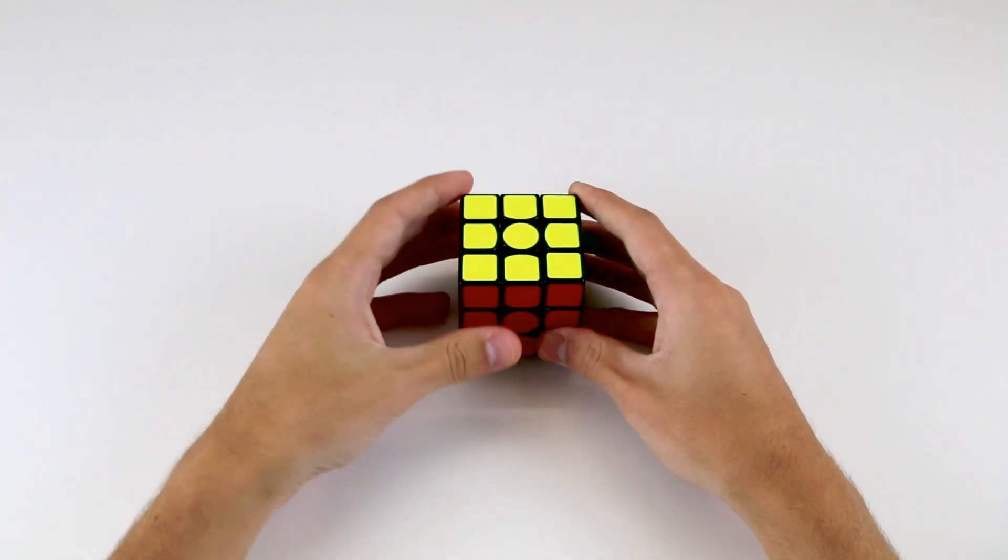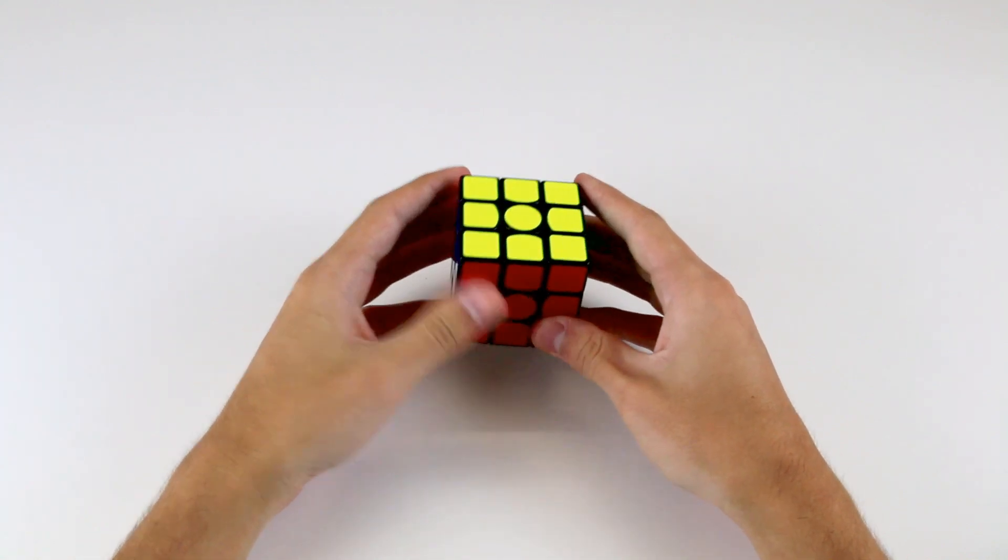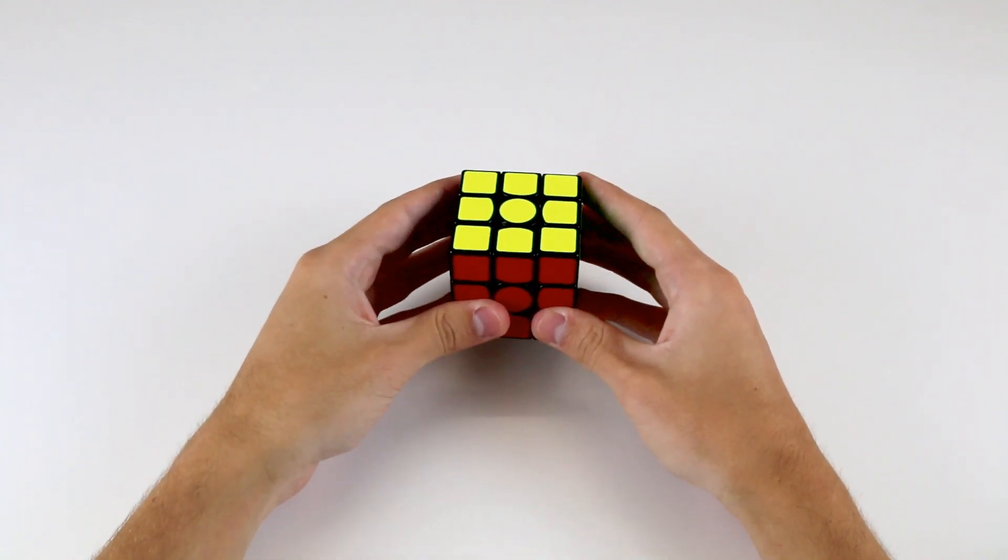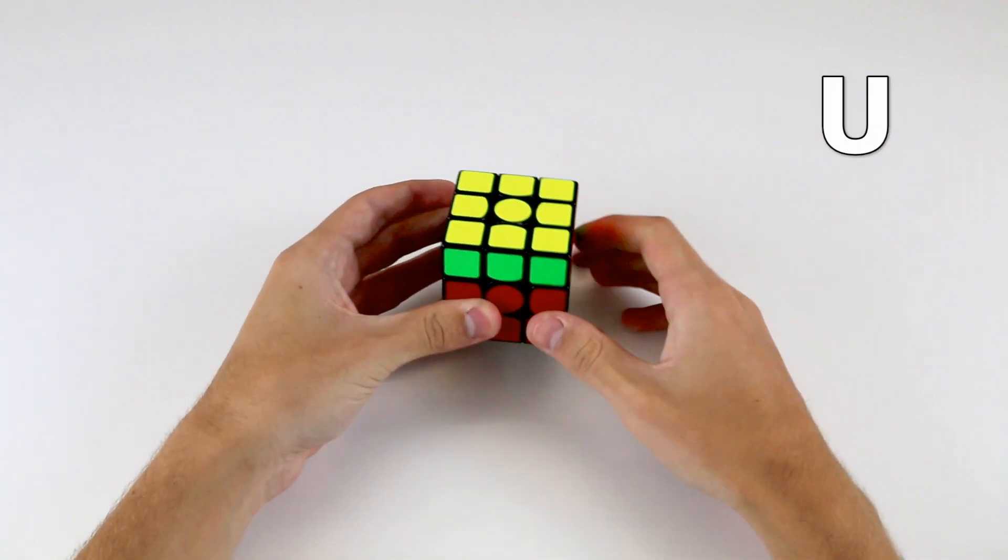From here, the notation for turning a cube is pretty simple. So a single letter by itself means that we turn the face 90 degrees clockwise. So for example, U is simply turn the top face 90 degrees clockwise.